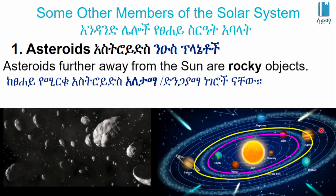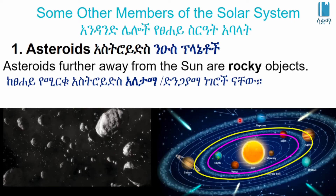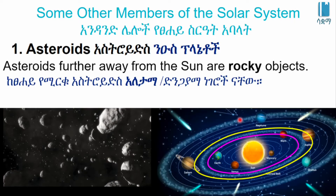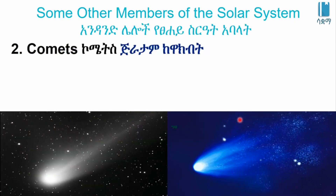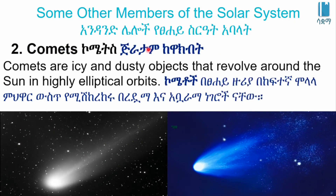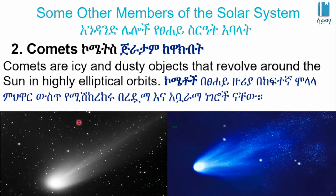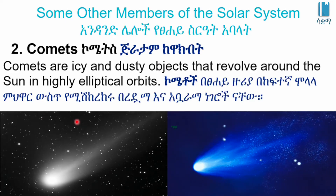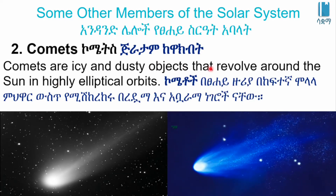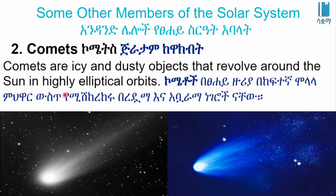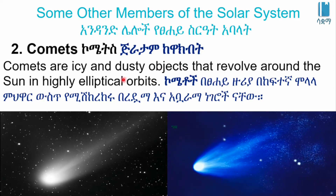Comets are icy objects that revolve around the sun in highly elliptical orbits.